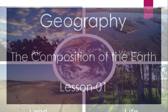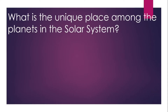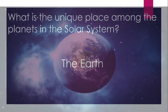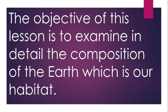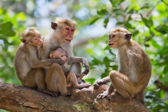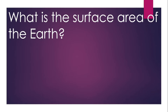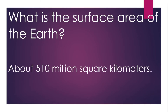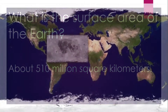Lesson 1: The Composition of the Earth. What is the unique place among the planets in the solar system? The answer is the earth. The objective of this lesson is to examine in detail the composition of the earth, which is our habitat. The surface area of the earth is about 510 million square kilometers.